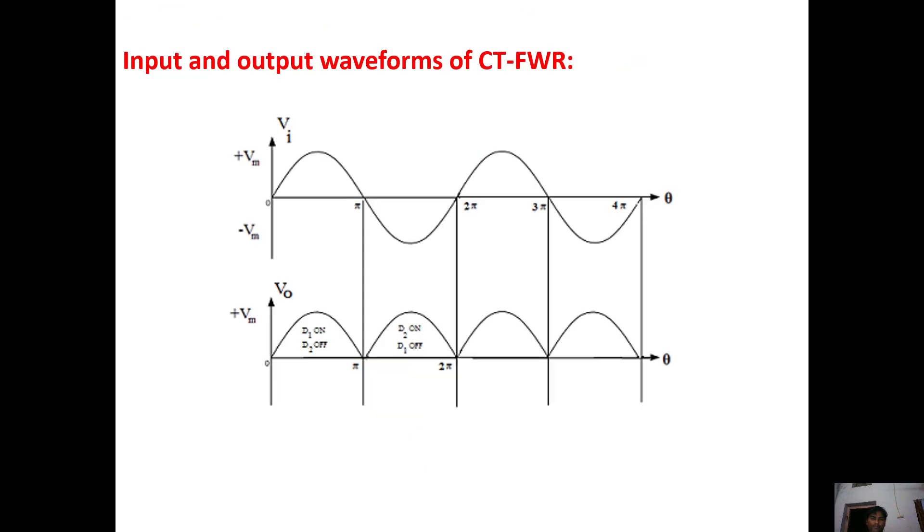Here you see the input and output waveforms of center-tapped full wave rectifier. Here you see the entire complete cycle function. In positive duration of time, D1 is on and D2 is off. In negative half cycle time, D2 is on and D1 is off. That is the duration 0 to pi, pi to 2 pi.